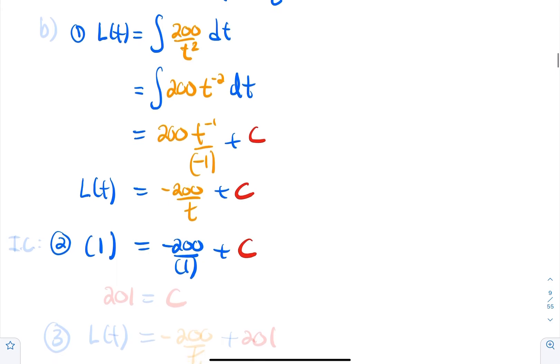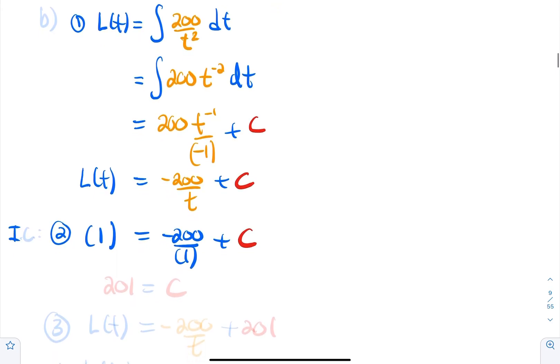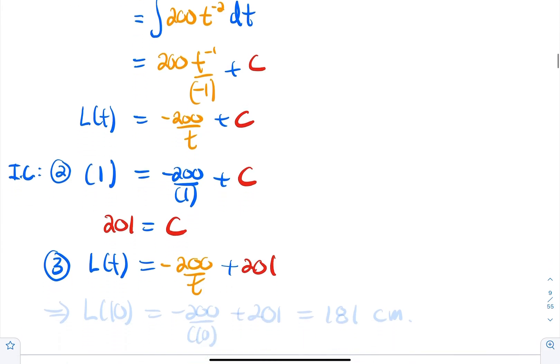Now use the initial condition to find c. We know L(1) = 1, so: 1 = −200/1 + c, which gives 1 = −200 + c. Solving, c = 201. Therefore the length formula is L(t) = −200/t + 201.